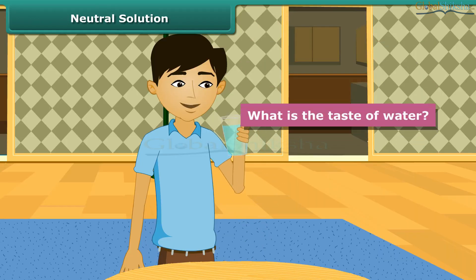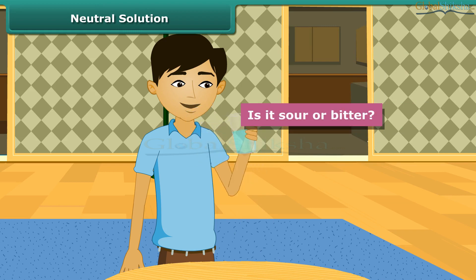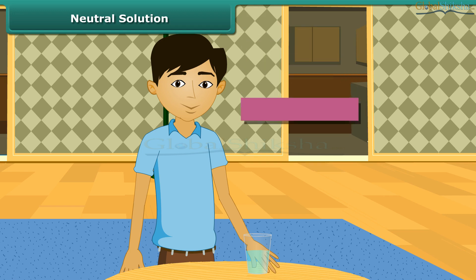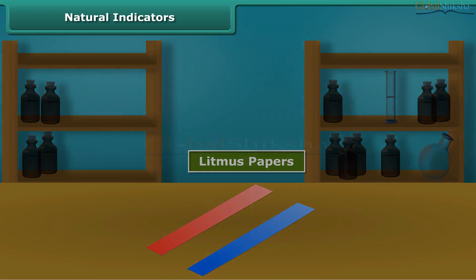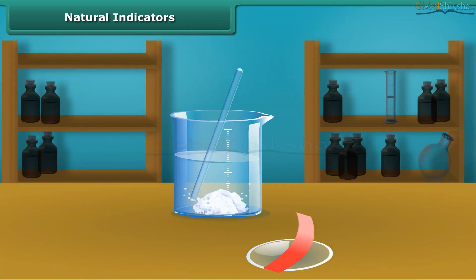Water is neither sour nor bitter — it is neither an acid nor a base. Substances that are neither acid nor base are called neutral solutions. Litmus is a natural indicator extracted from lichens. It has a purple color in distilled water and is available in the form of a solution or litmus papers to test the nature of a solution.